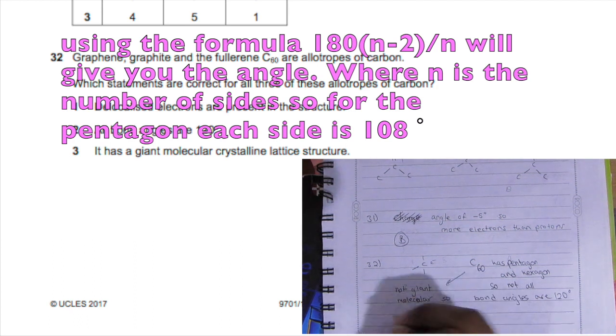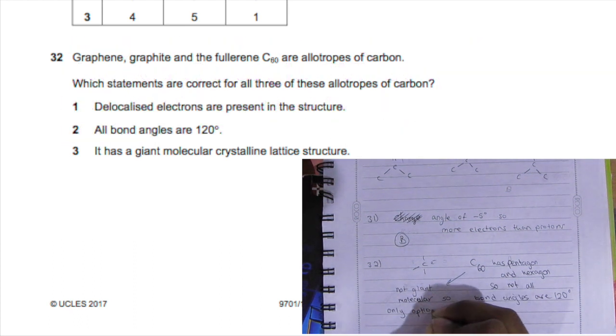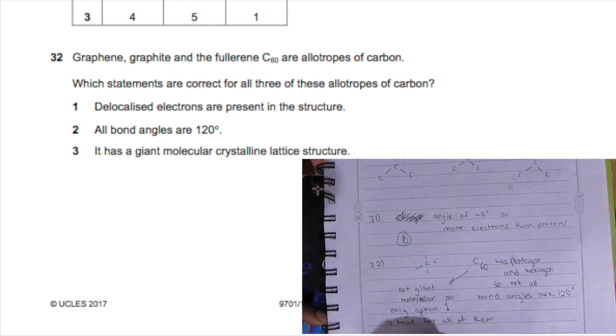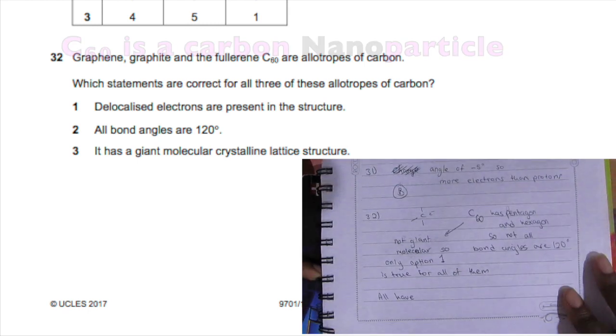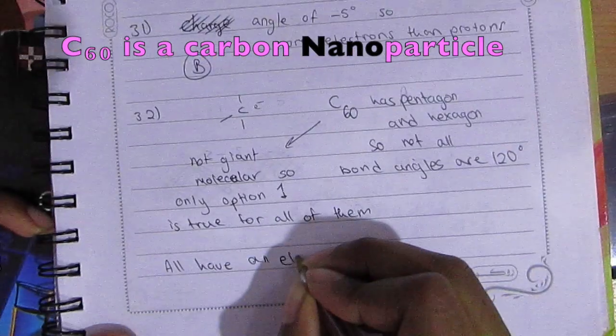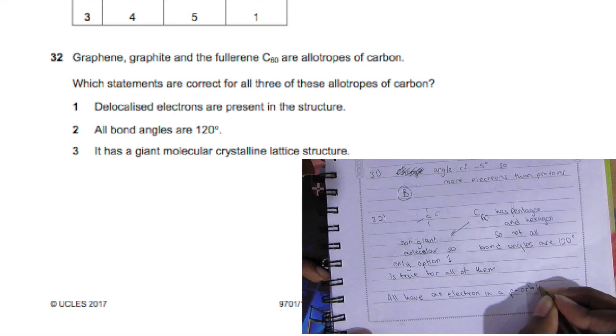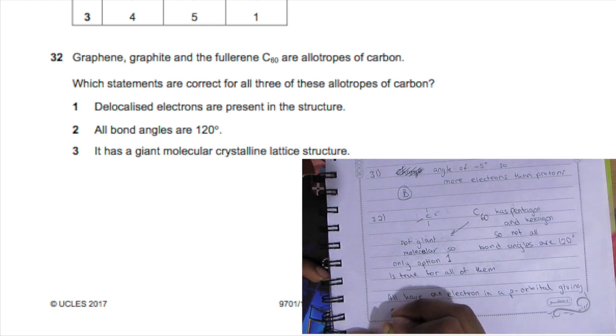All bond angles are 120 degrees? That is not true because C60 has pentagons and hexagons. It has a giant molecular crystalline lattice structure? No, C60 does not have a giant molecular structure. So only option one is true for all of them—D is your answer.